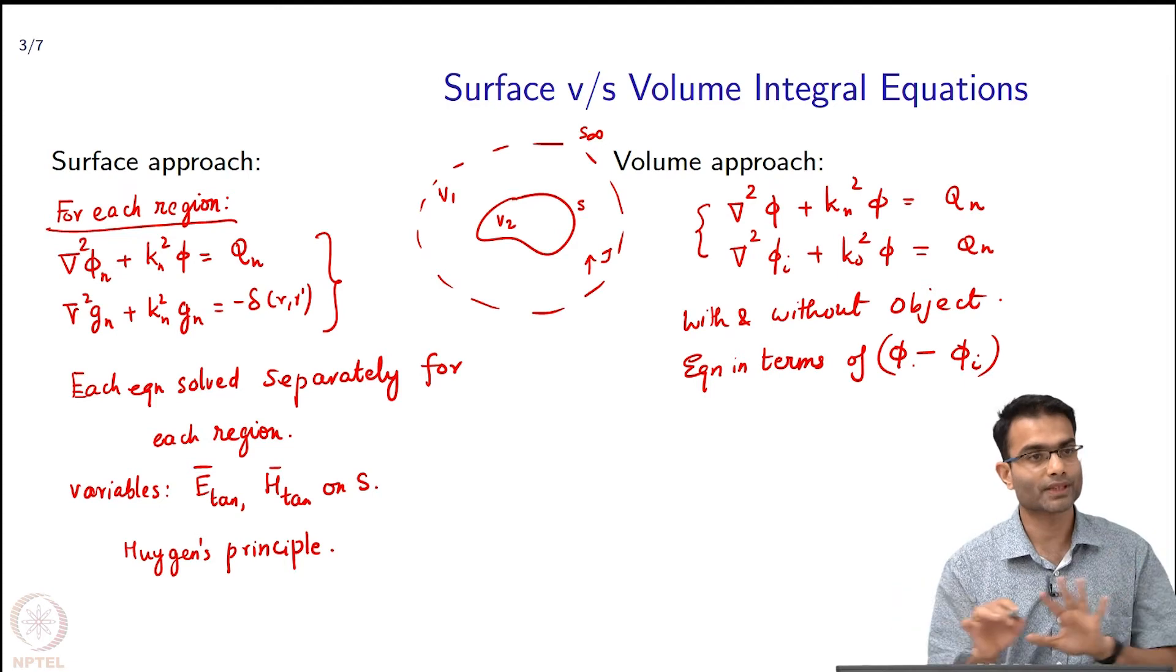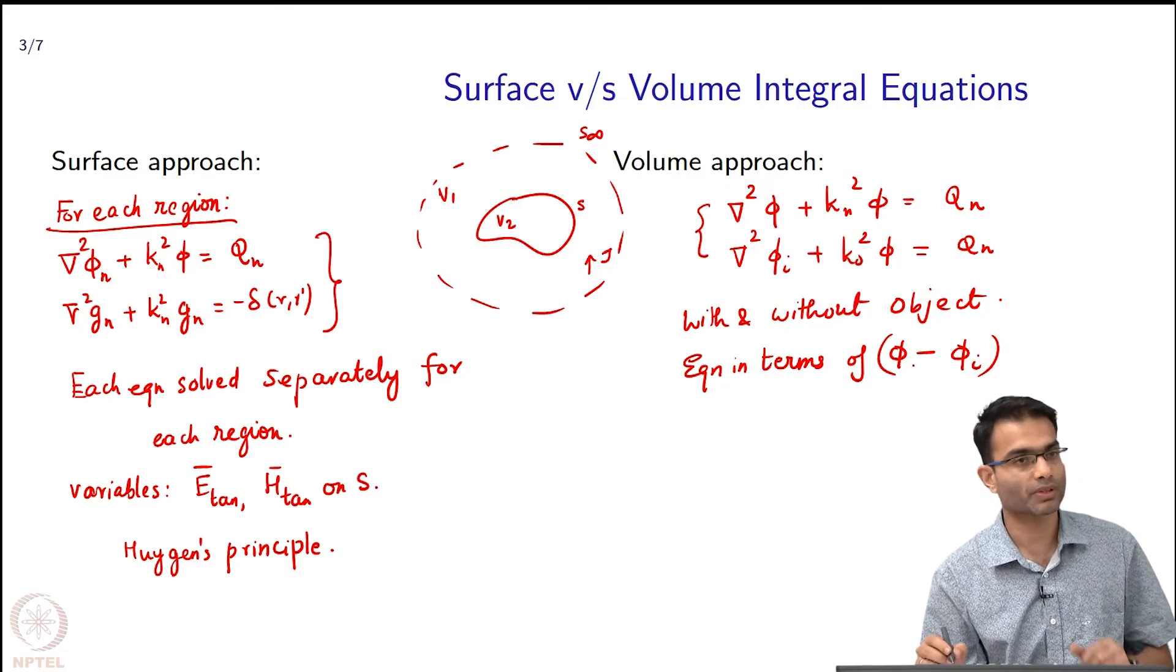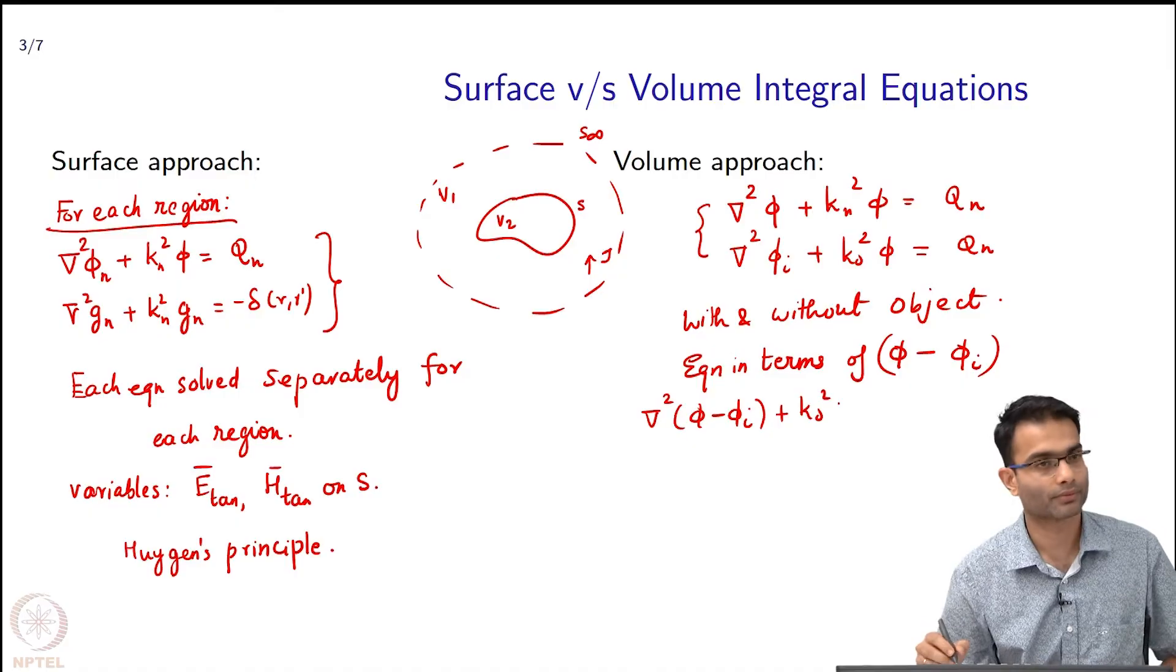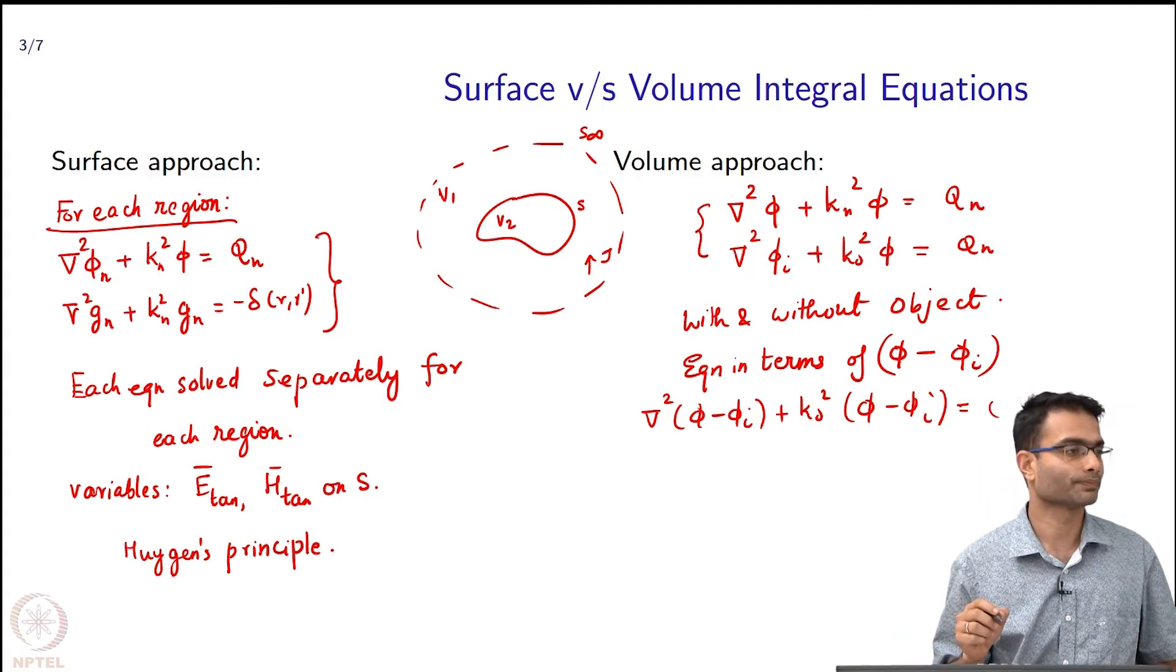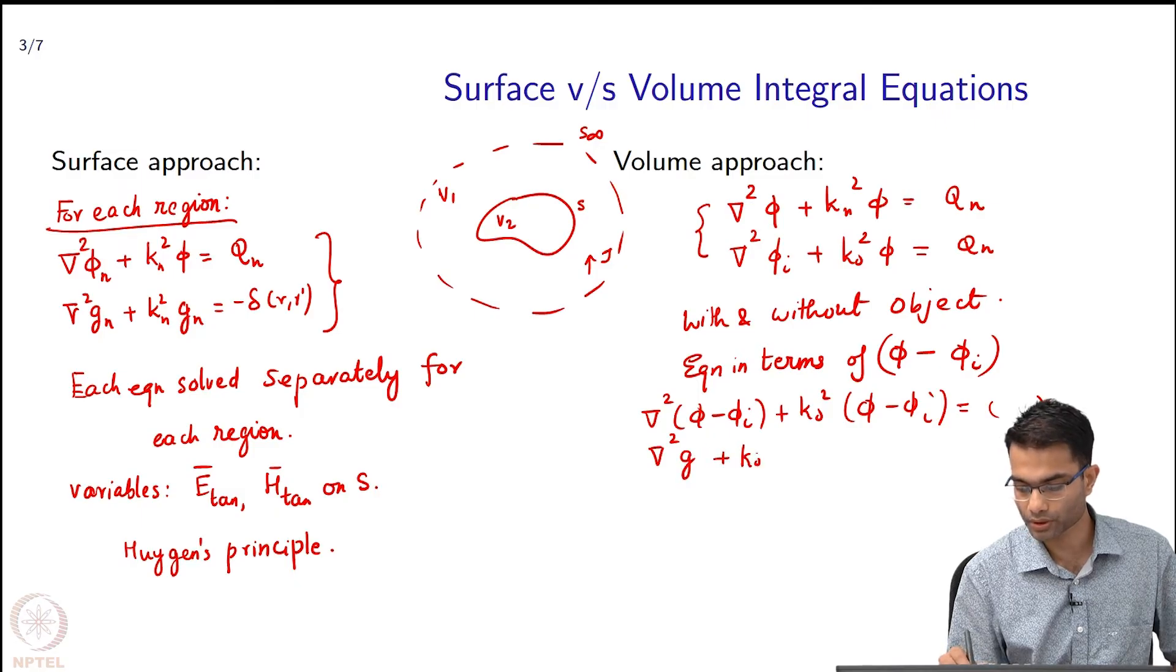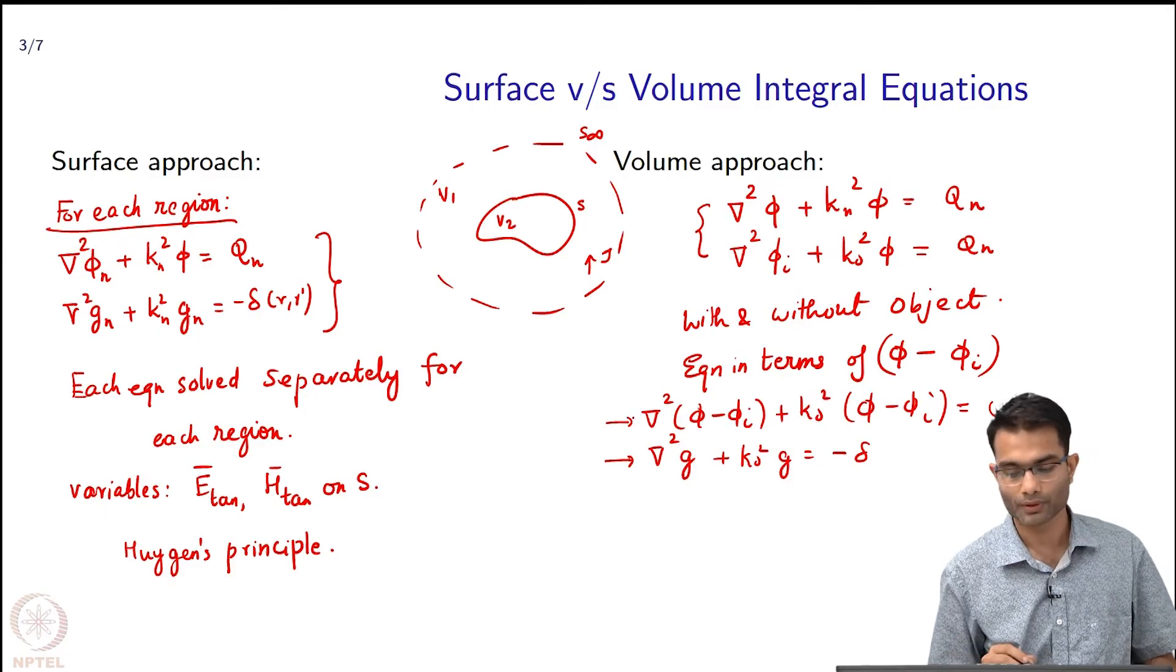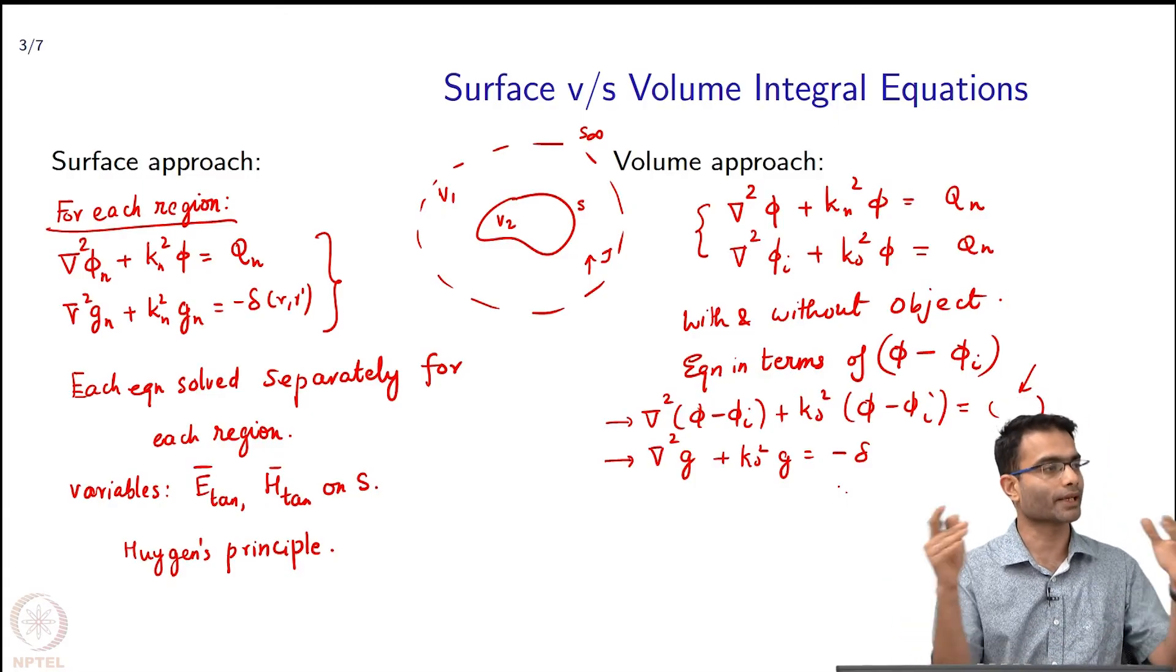The one where V1 where there is no object - vacuum. If you remember that when I subtracted these two equations, I kept it something like this: ∇²(φ - φᵢ) + I kept k₀² over here and then φ - φᵢ is equal to whole bunch of terms over here. To solve this I used which Green's function? The one with k₀² - that is what I had used. If I know the solution to this guy, this solution becomes a convolution of the forcing function on the right hand side with the Green's function.